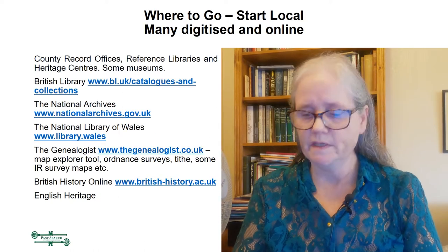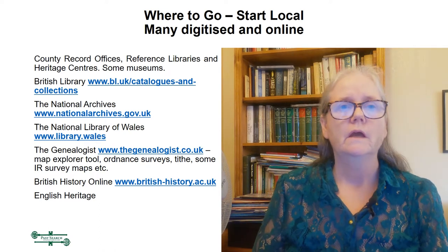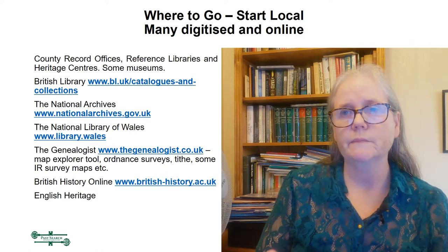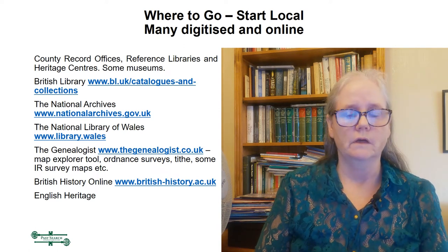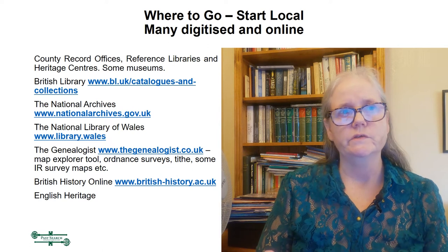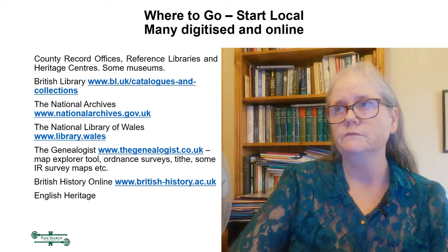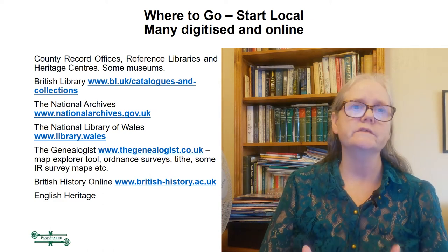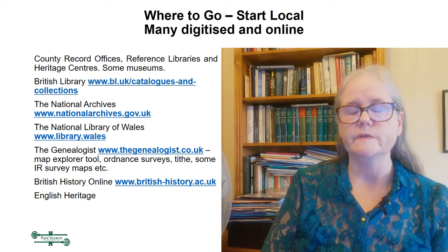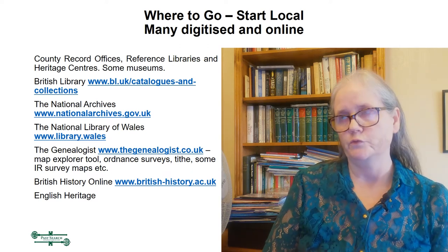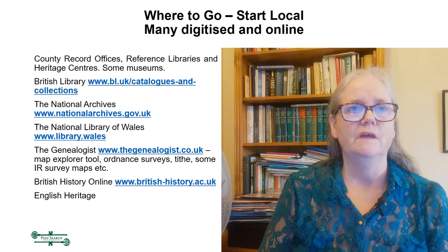Just before we take a closer look, I'm going to go over where you might find maps in particular. The good news is that an increasing amount is becoming available online, but it's still only a fraction of what you will find in various archives. As with many family history sources, perhaps your best place to start is your county record office, where you will find maps going back even into the 1300s. You'll also find maps in reference libraries, heritage centres, and in some local museums, many of which have collections in their backroom storage areas, and you might have to inquire to find out exactly what they've got.